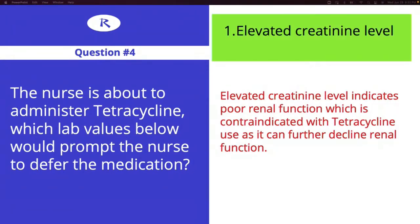The correct answer is number one — elevated creatinine. Remember, because tetracyclines are excreted in the urine, it is the job of the kidneys to ensure excretion. So if there is already kidney compromise, we would not want to give this medication. Don't beat yourself up for not knowing this if you are a new viewer.